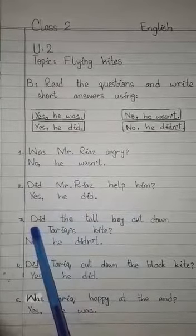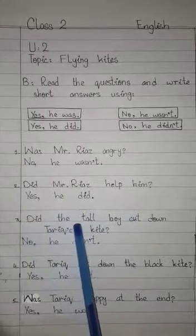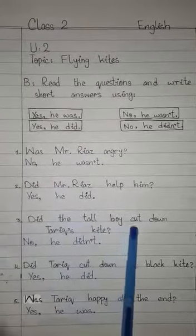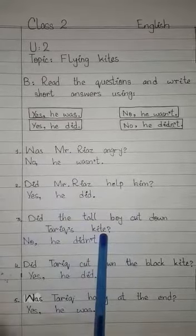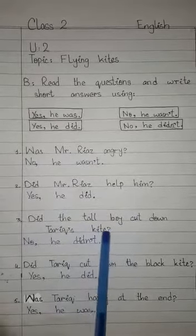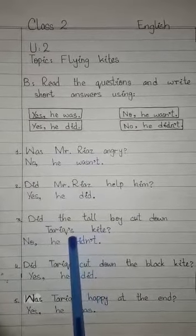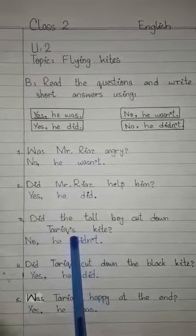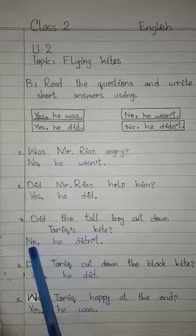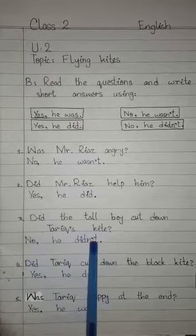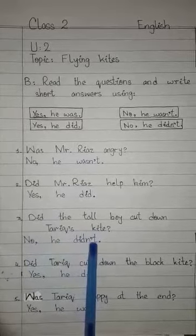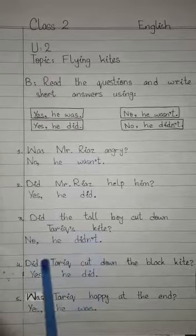Number 3. Did the tall boy cut down Tariq's kite? No, he didn't.